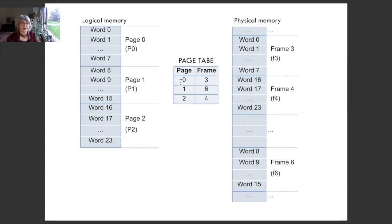In the page table, we have pages 0, 1, and 2. This is a 3-page program. It shows that page 0 is at frame 3. In frame 3 we have words 0 up to 7, corresponding to the content of page 0 in the logical memory. Page 1 is loaded at frame 6, so in frame 6 we have the words from 8 to 15. And the last page, page 2, is loaded at frame 4, from word 16 up to word 23. Notice that the words in the physical memory are not contiguous, however they were contiguous in the logical memory.